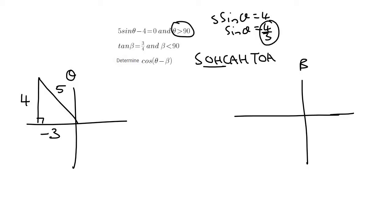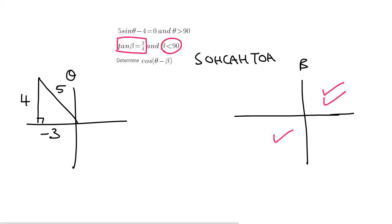That triangle is now complete, and so we can move over to the beta triangle. The beta triangle says that tan is a positive number. So that could be here or here. Then they say that the angle must be less than 90. So that can only be there. And so that's where we can construct our triangle, like this.